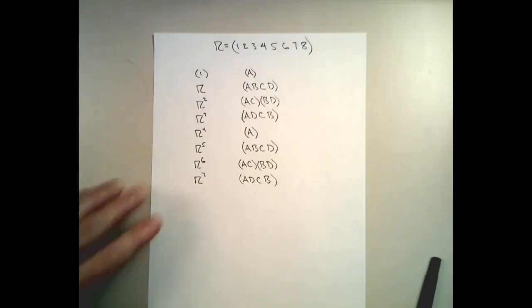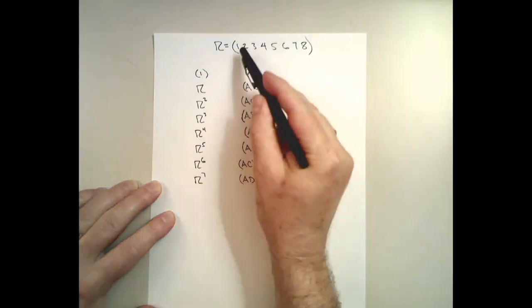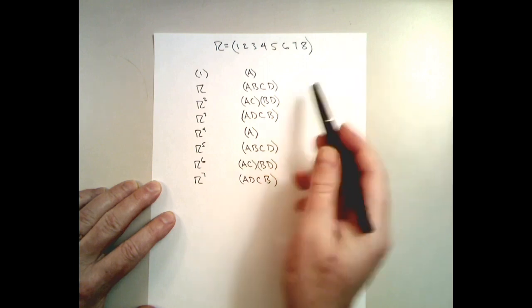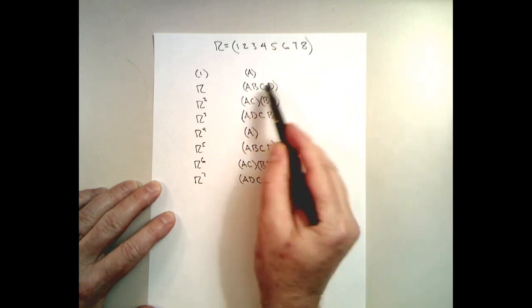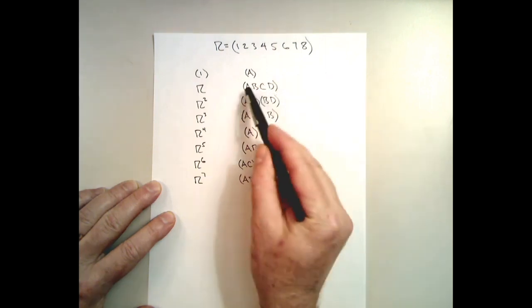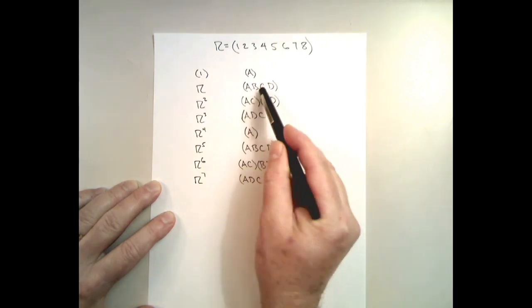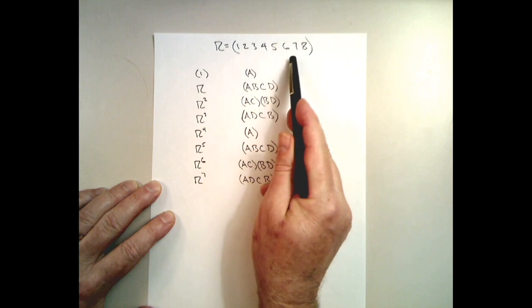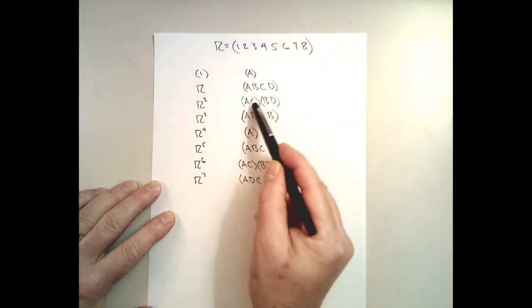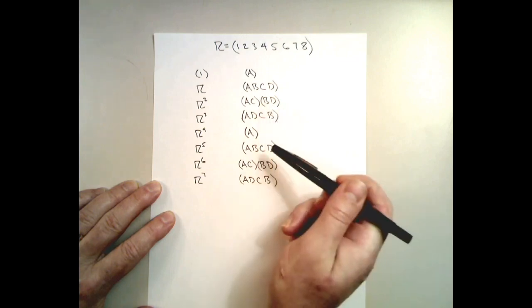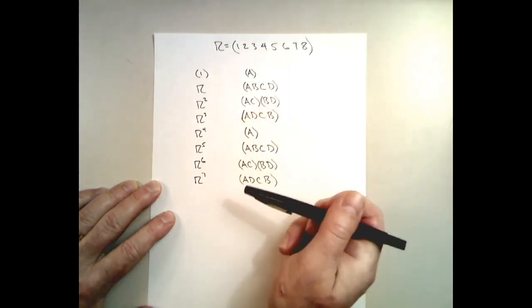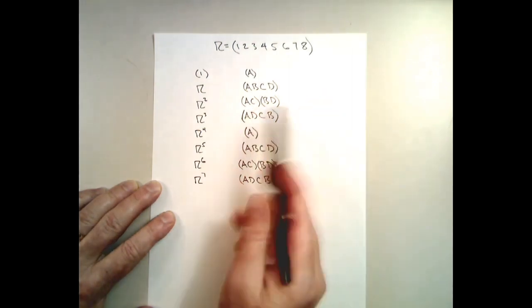Whenever we permuted the vertices of the octagon so that vertex one went to two, two went to three, and so on, what we saw was that prompted the permutation of the letters such that A would go to B, B went to C, C to D, D back to A. A second rotation sent A to C, C to A, B to D, D to B. If we had done a third one, we would have seen A went to D, D went to C, C went to B, and B went back to A.